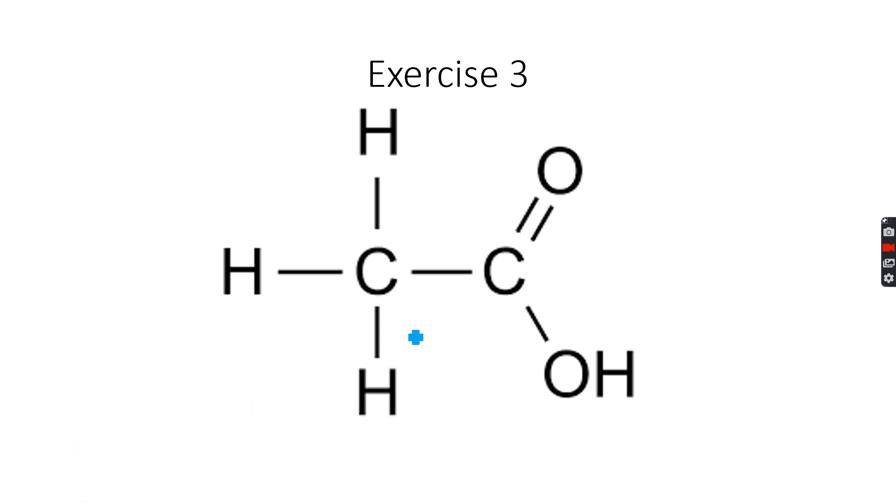The next molecule is ethanoic acid. Now we have two carbon atoms - one is this one, and the other is this one. This is one carbon environment because it is attached to three hydrogen atoms and another carbon atom. This is another carbon environment because it is attached to two oxygen atoms and one carbon atom. These two carbon atoms are totally attached to different groups.